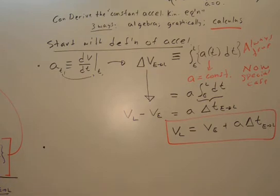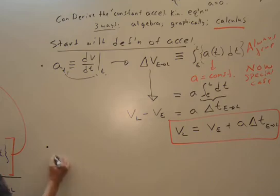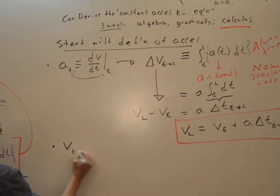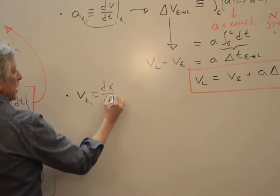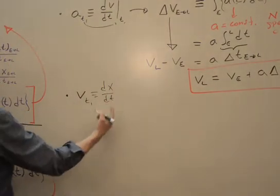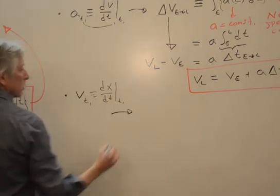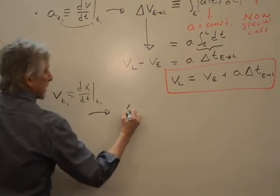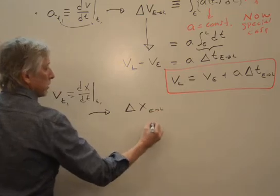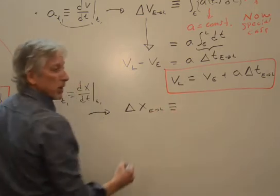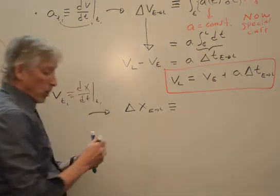And step two is to go to our other definition. You really don't have very many definitions the more familiar you get with it. So that means that the velocity at any moment, it doesn't matter, velocity at one, is defined as the derivative of the position or the rate at which position changes at that time. Well, we're going to write that as an integral. And so we've got delta x earlier to later is by definition, which is always true.